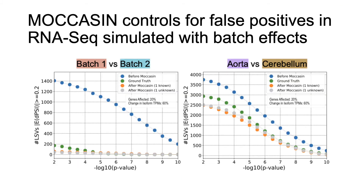We first tested MOCCASIN on simulated RNA-seq of mouse aorta and cerebellum samples. We simulated a ground truth set of samples in green, and samples in which half were injected with a batch effect in blue. Shown here is the number of differentially spliced LSVs on the y-axis as a function of the difference's significance on the x-axis. On the left are splicing differences between batch 1 versus batch 2 samples — the injected batch effect is strong in blue but absent in the green ground truth. MOCCASIN brings these batch splicing differences down to ground truth, whether supplied with a known confounder in orange or discovering it on its own in gray. On the right, the injected batch effect introduced false positive differences between aorta and cerebellum samples, and MOCCASIN reduces these false positives.